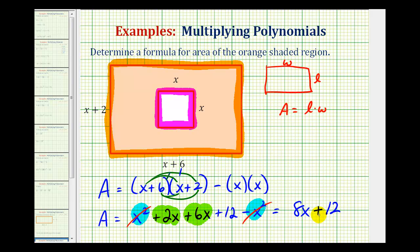So this would be the formula that would give us the area of the orange shaded region, if we had a value of x.